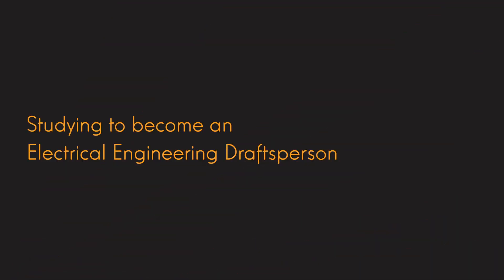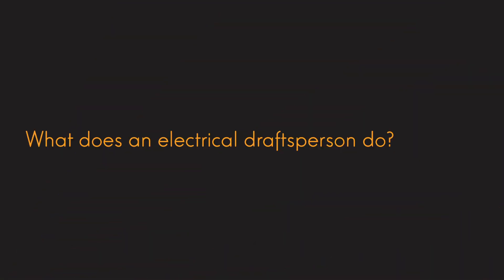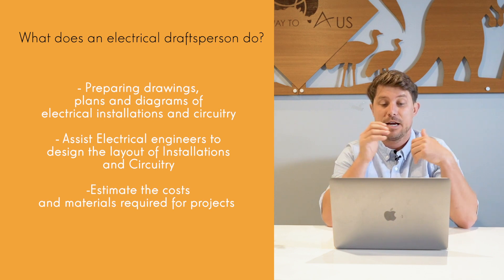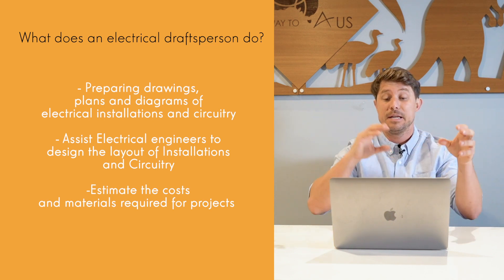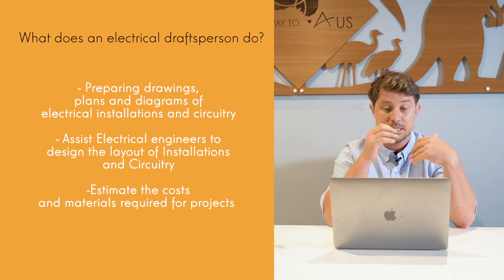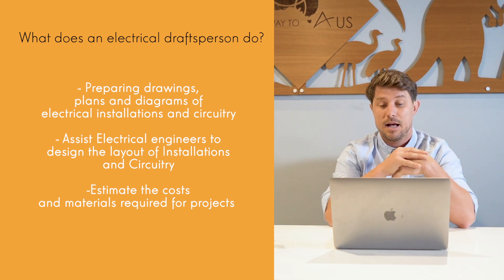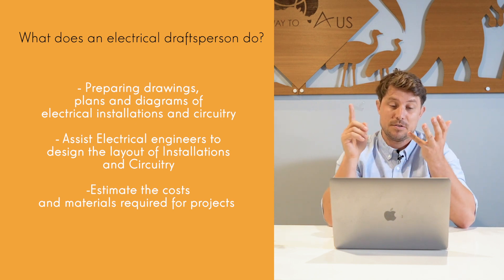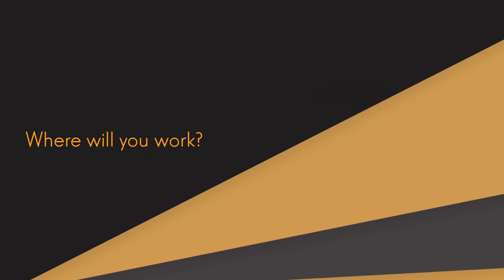Today I'm going to discuss with you studying to become an electrical engineering draftsperson. What does an electrical engineering draftsperson do? You prepare drawings, plans, and diagrams of electrical equipment, installations, and circuitry. You assist electrical engineers to design the layout of electrical installations and estimate costs, quantities, and things like that for large projects.